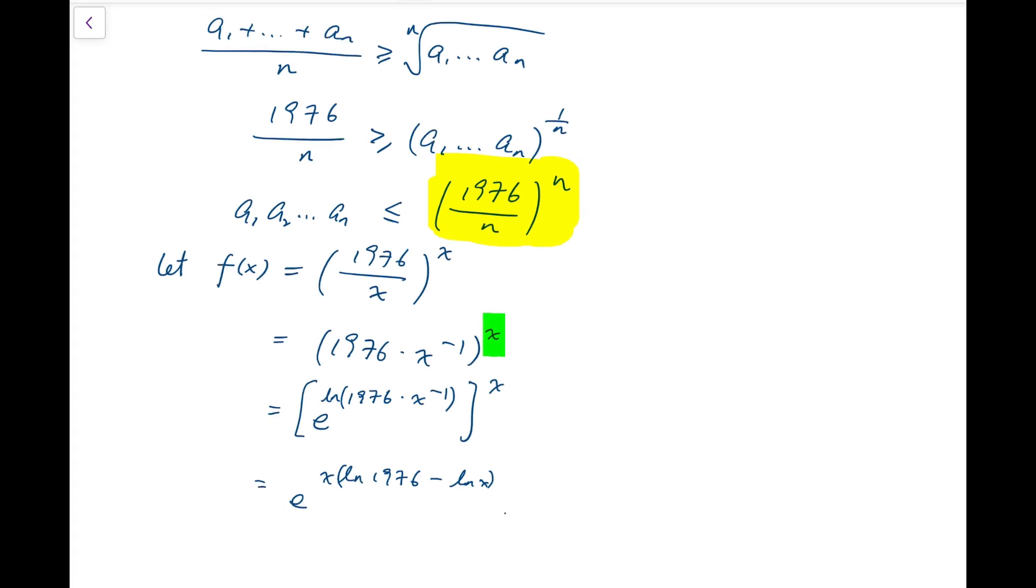Now, I'm going to differentiate it using the chain rule. f prime of x is equal to the derivative on the base e. We just have the original function multiplying by the derivative of the index. For the derivative of the index, we have to use the product rule. We have the derivative of x multiplying by this part unchanged and then adding by x times minus 1 over x. Simplifying, we have the original function which is actually never zero multiplied by natural log 1976 minus natural log of x minus 1.